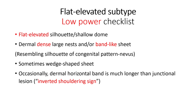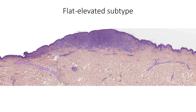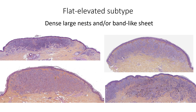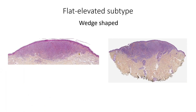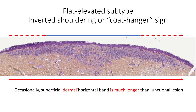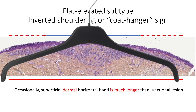Moving to the flat elevated subtype, here is the low power checklist. A typical example shows this flat elevated architecture, always with high density — the upper dermis is made of nests and sheets that are more coalescent. Lesions that go deeper can have a more wedge-shaped architecture. Another key element is what we call the inverted shouldering or coat hanger sign: the dermal expansion goes much further on the sides than where the junctional component stops. This inverted shouldering or coat hanger sign should always raise suspicion for nevoid melanoma.